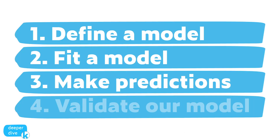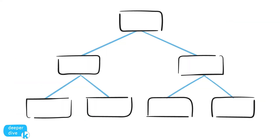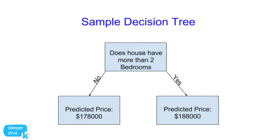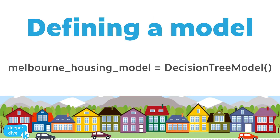Let's apply all of this to what we've talked about in this lesson. What type of model have we talked about so far? Decision trees. And we've talked about decision trees in the context of predicting housing prices for Melbourne, Australia. So without even knowing what our data looks like yet, we could guess that our model process might look something like this, where we define our model and name it melbourne_housing_model, setting it equal to a decision tree model. So we've defined our model.